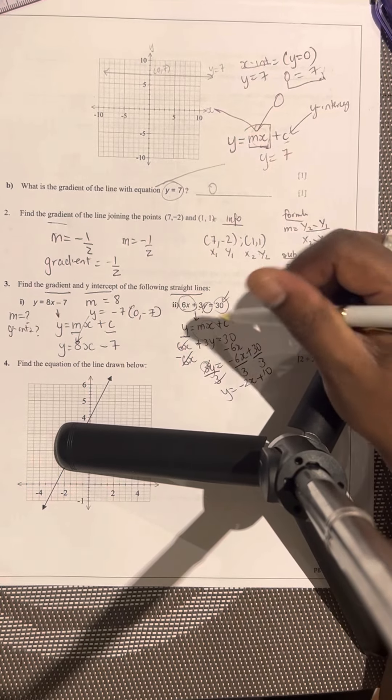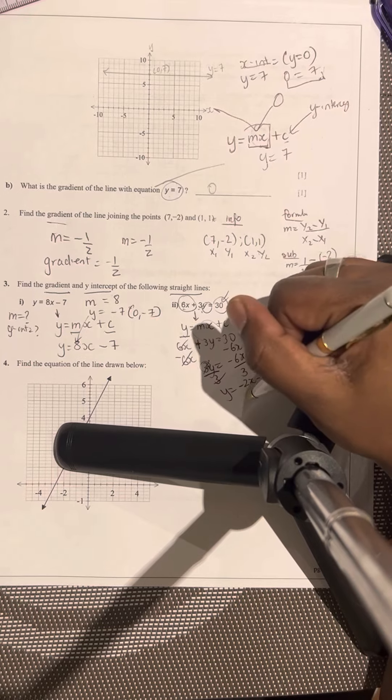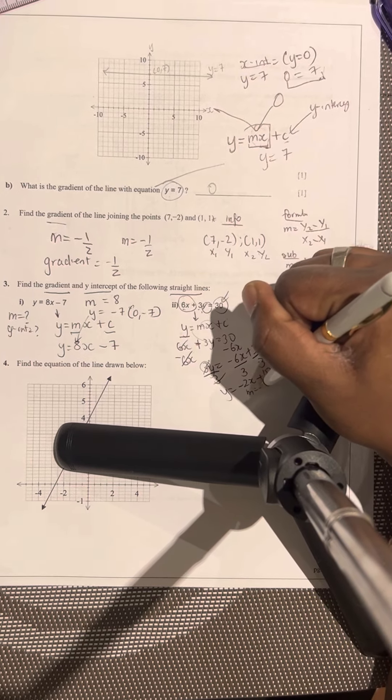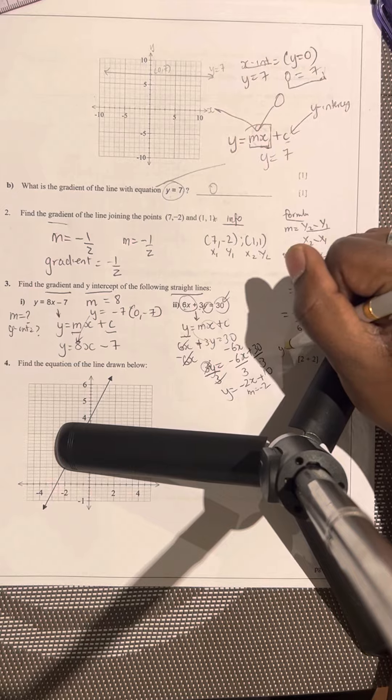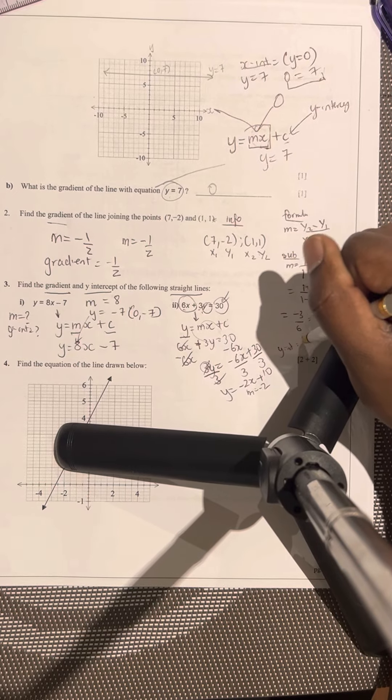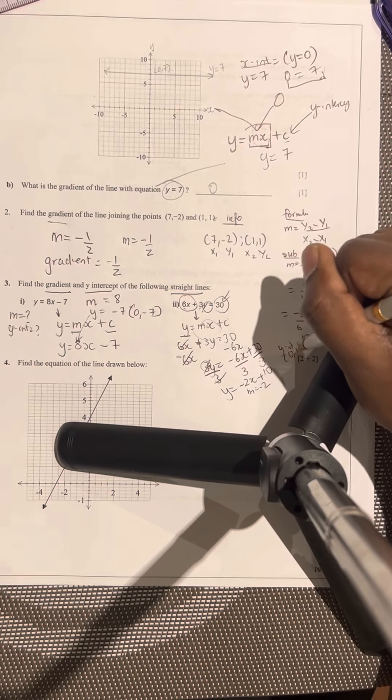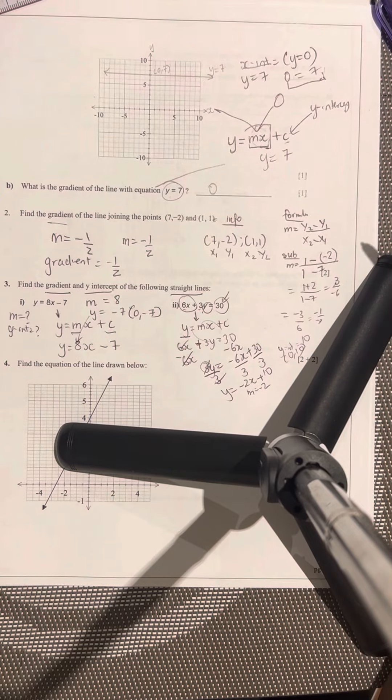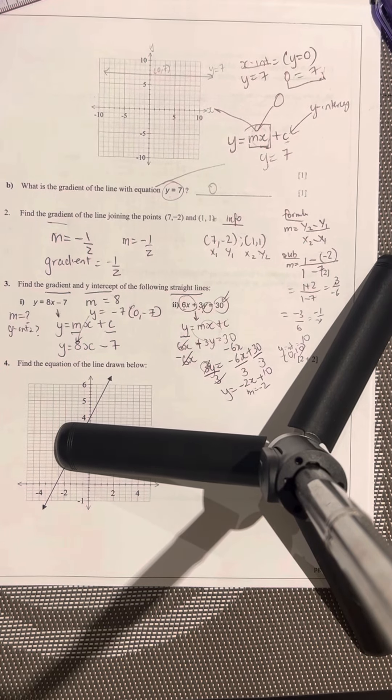Right, so if the question asks, what's the gradient and the y-intercept, m is equal to negative 2, and your y-intercept is going to be 10, also known as 0, 10. And I need to see the actual coordinate. So that's kind of the end of the question.